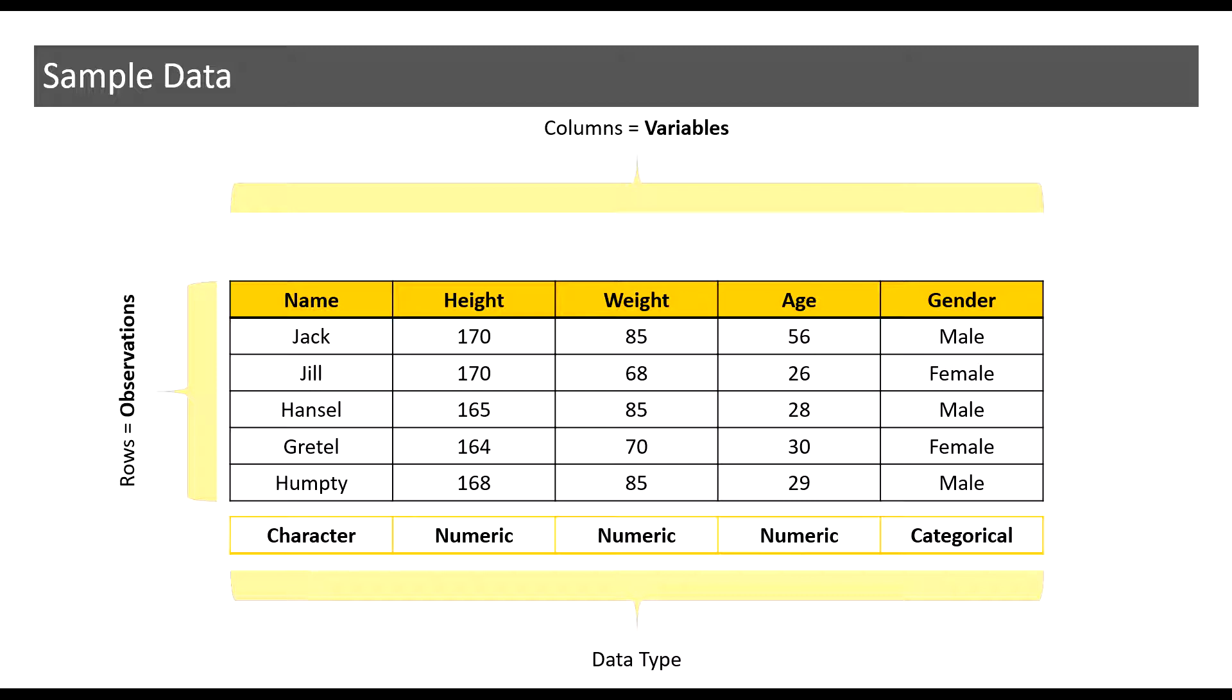Let us now draw a use case of classification models from this sample data right here. If I build a model to predict gender using variables such as height and weight then that is an example of a classification model. Therefore gender becomes my predicted variable and variables such as height and weight become my predictors.